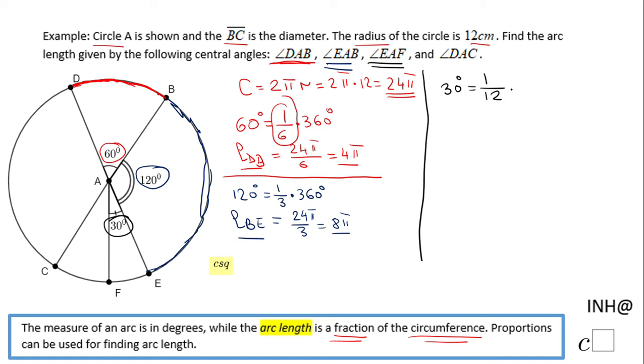So basically, for finding the length of this arc FE, we can do—360, I'm sorry—24π, in fact the circumference...